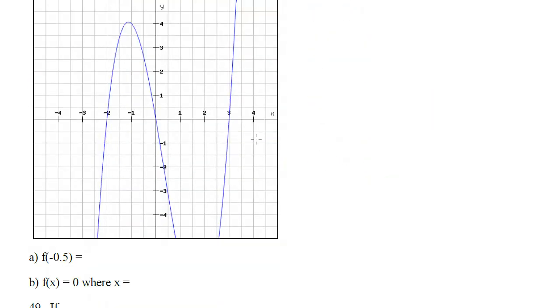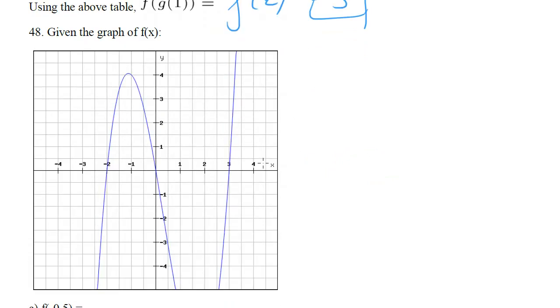Given this graph, what is f of negative 0.5? Well we go ahead and look for our x value. Negative 0.5 is right here. We go up, go right here. That's where the graph hits. And that's about 2.5. So here the y value is 2.5.